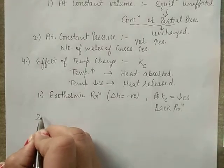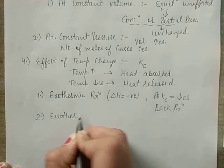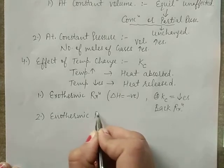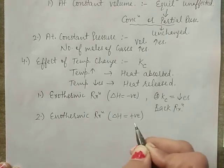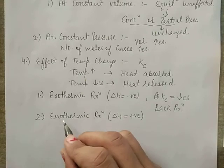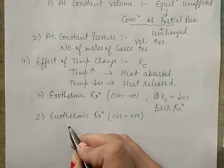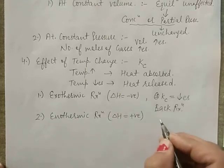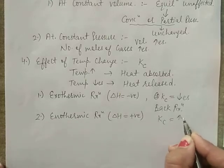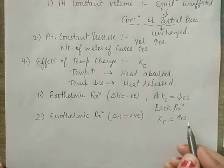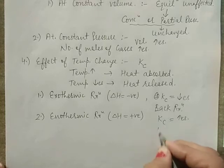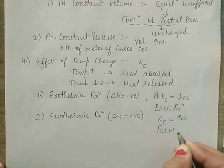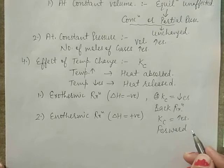In an endothermic reaction, ΔH is positive because heat is being absorbed. As temperature increases, Kc increases and the reaction moves in the forward direction.